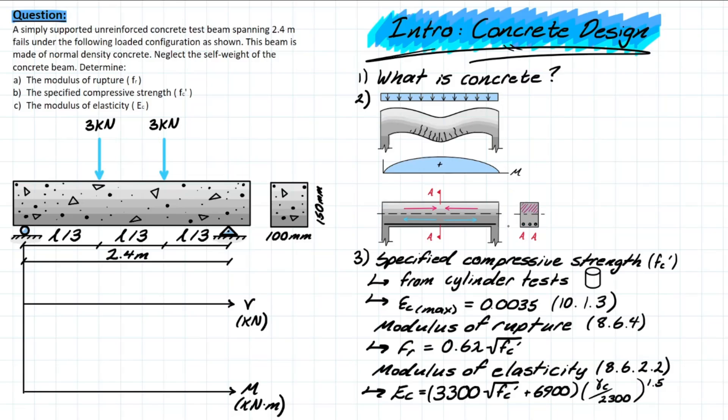In order to do this design of reinforcement, we have to first understand the properties of the concrete material. One of the most important design variables that we're going to be looking at in concrete design is represented by the specified compressive strength, fc prime.